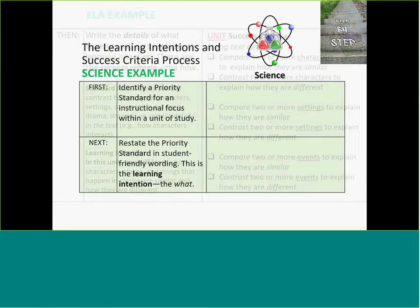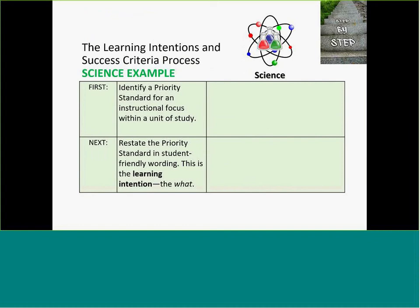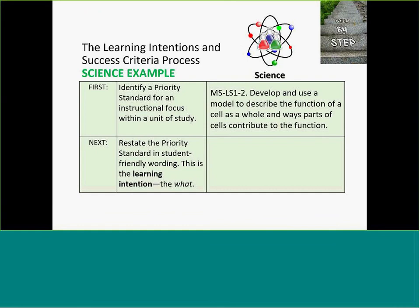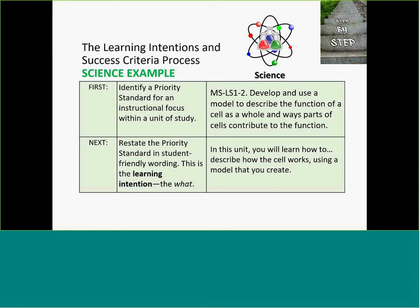Now let's look at the science example. This is from a Next Generation Science Standard. The directions are: identify one and then restate it. Here we go: 'Develop and use a model to describe the function of a cell as a whole and the ways parts of the cells contribute to the function.' For middle school, that's pretty straightforward and clear, but it's such a powerful exercise for teachers to go through this and say, 'In this unit, you will learn how to...' and then write that in a form that communicates very succinctly and clearly to students what the focus is for that unit.